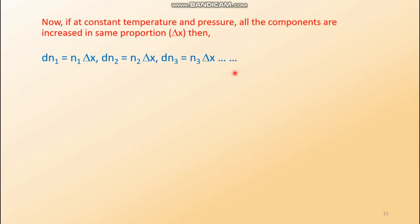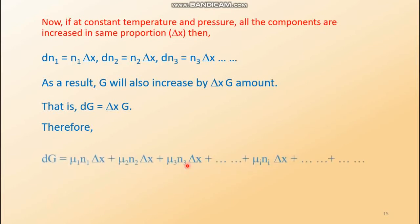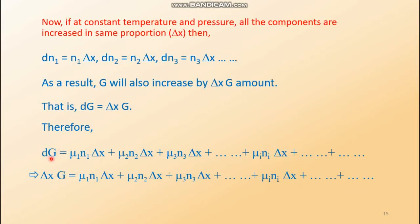If dN1 equals n1·delta x, then dG also increases by the proportion delta x, so we can write dG as delta x times G. Therefore equation one can be rewritten with dN1 replaced by n1·delta x, dN2 by n2·delta x, and so on. Delta x can be taken as common on the right-hand side and cancelled with delta x on the left-hand side.